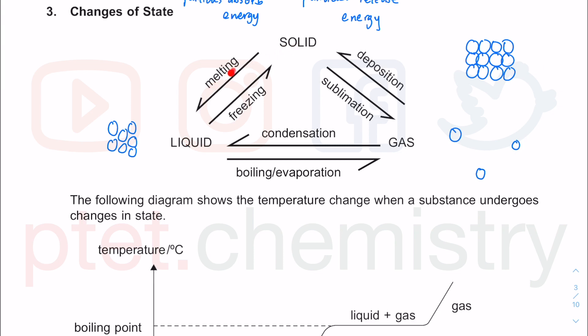In terms of names of changes of state: solid to liquid is called melting, and liquid to gas is called boiling or evaporation. Boiling takes place only at the boiling point — there is no other temperature at which boiling happens. But evaporation is different. You can leave wet laundry outside on a hot day and the water will evaporate away — obviously the water turns into gas and escapes, but the sun is not exactly boiling the water. It simply evaporates, because evaporation happens at any temperature below the boiling point.